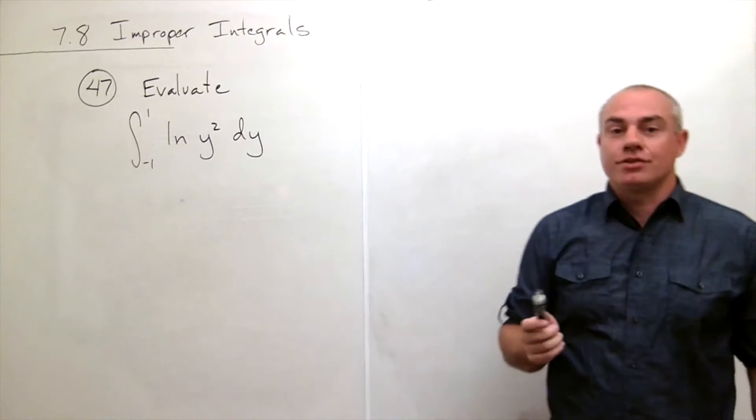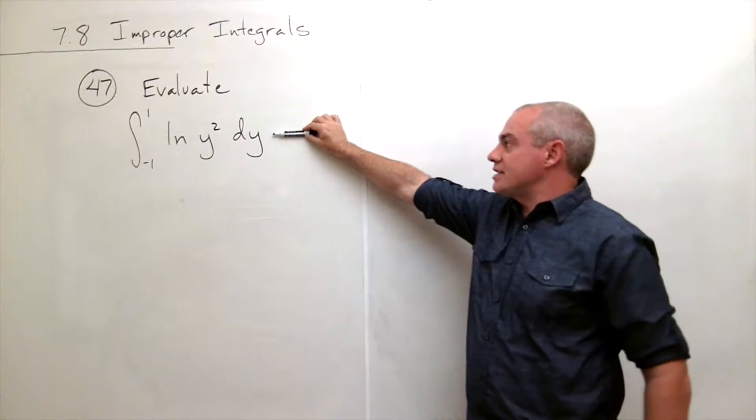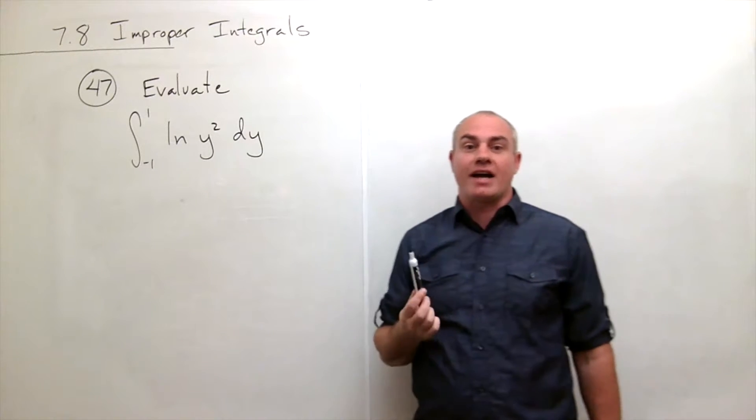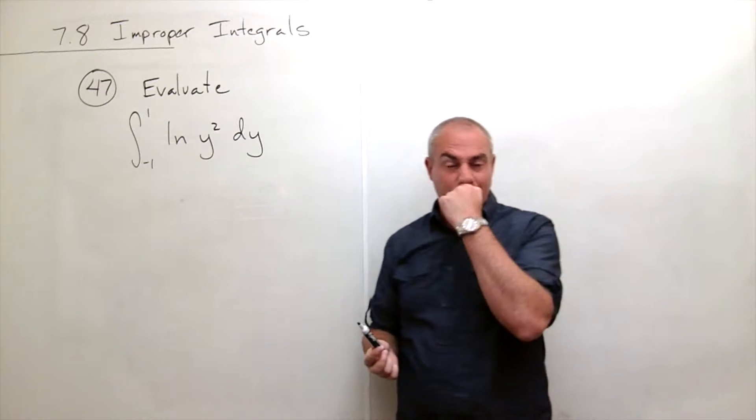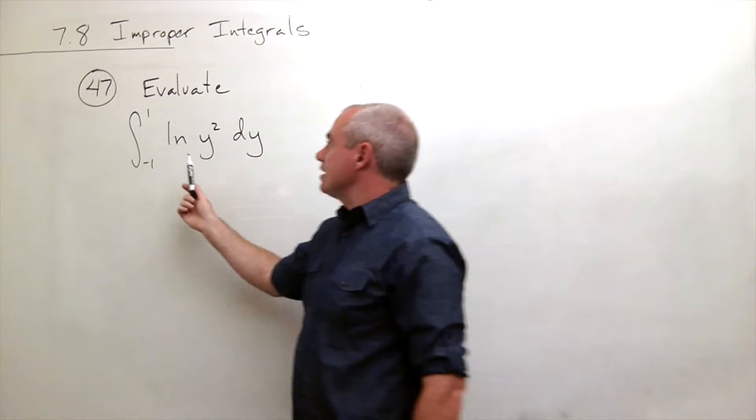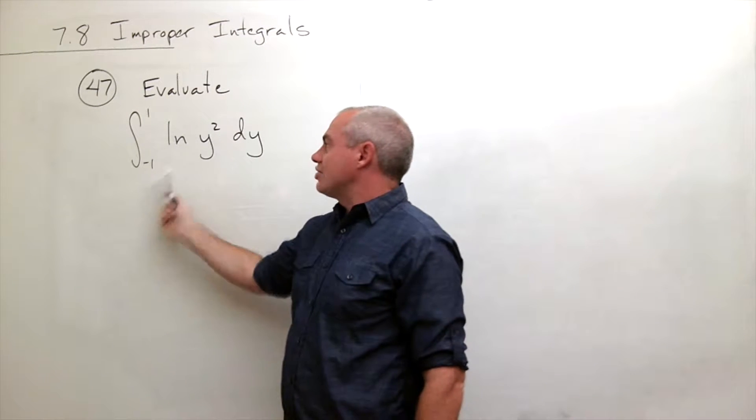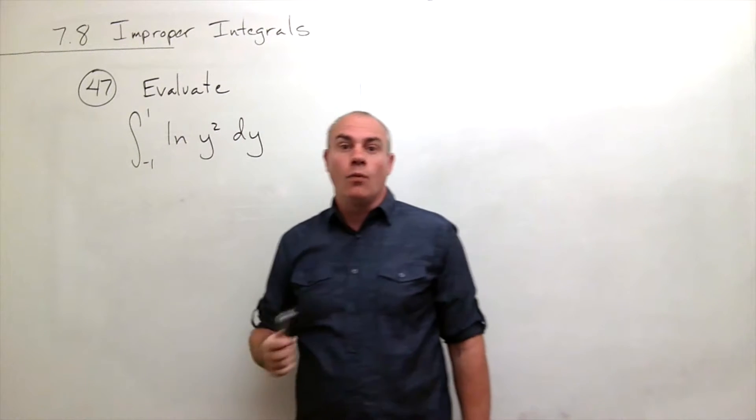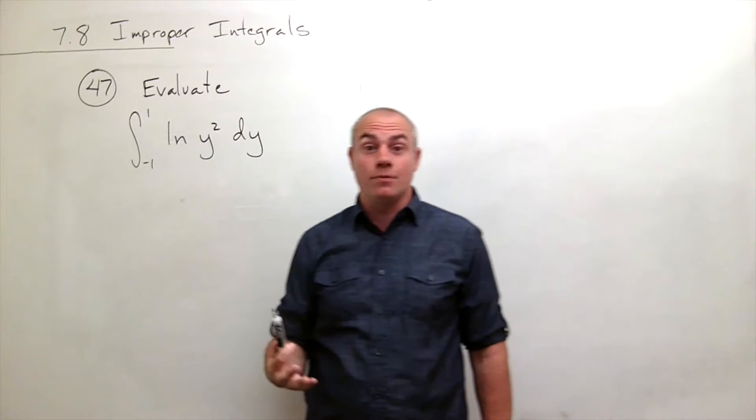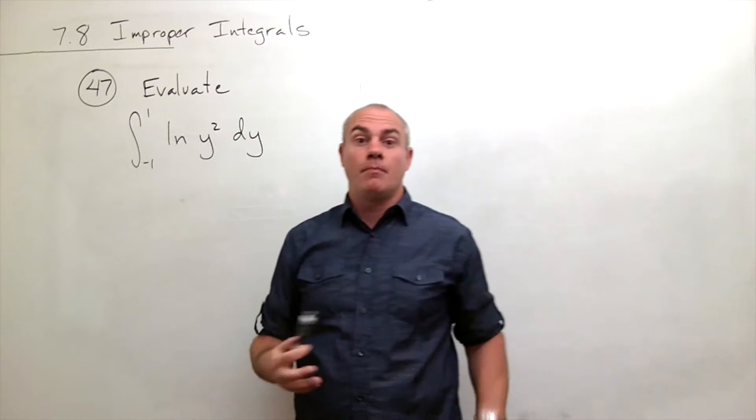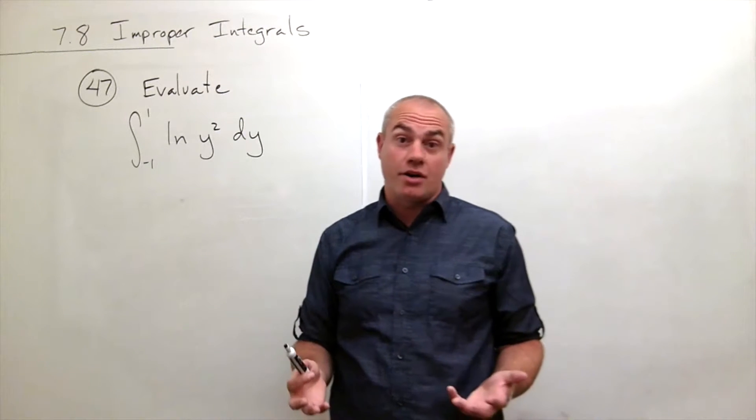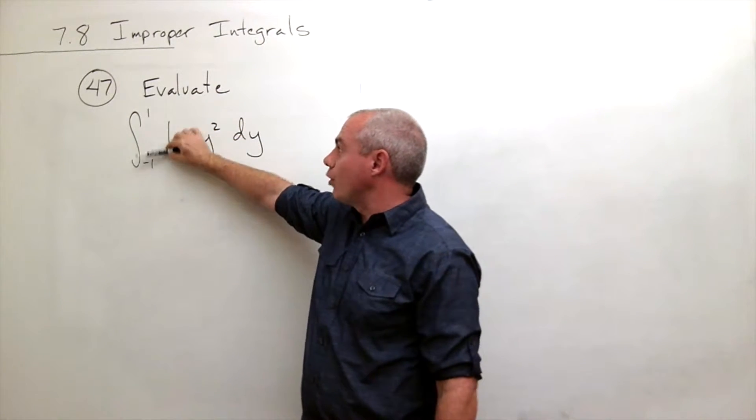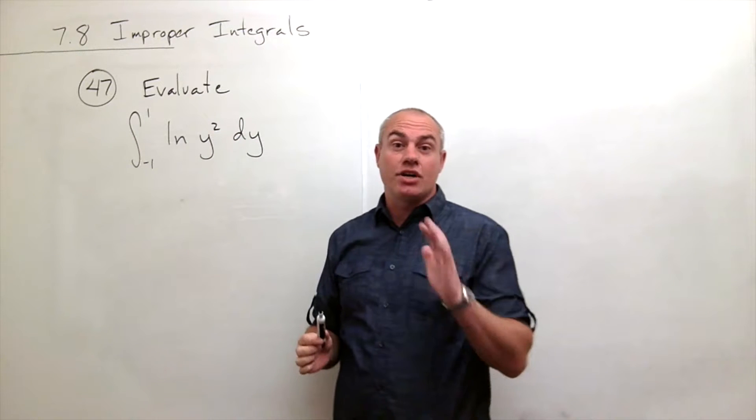The first thing we need to do when taking this definite integral is recognize that it is in fact an improper integral. The way we do that is we see that you can't plug in all these values into a natural log. What types of values can you plug into a natural log? Positive ones, not zero. Zero doesn't work. There's no ln of zero. But this ranges from -1 to 1, so zero's a problem.